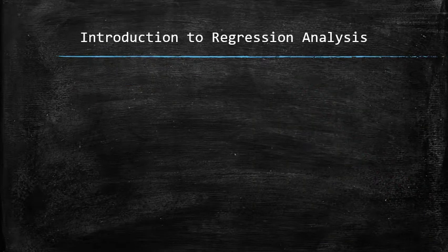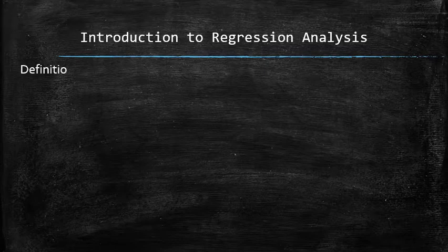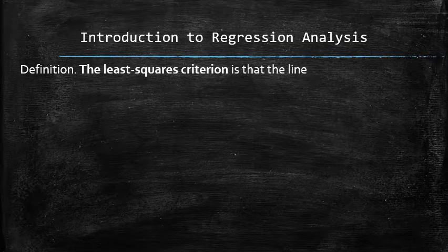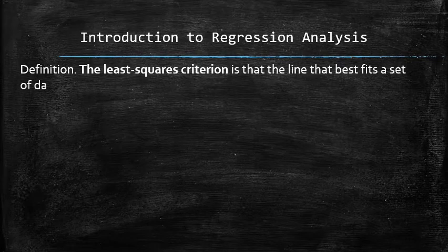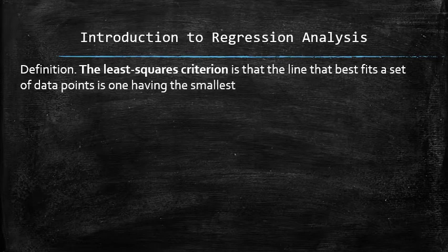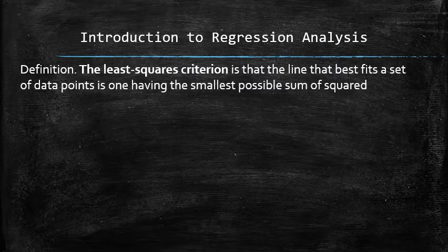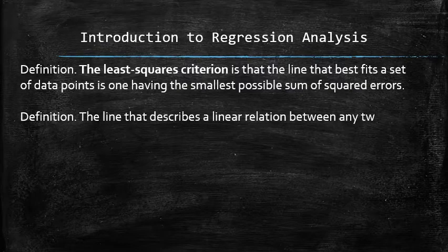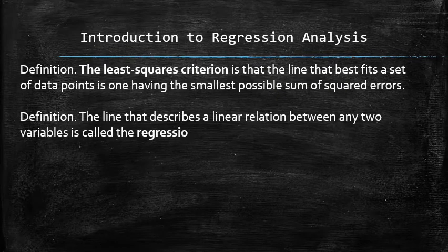The criterion that proved itself practical is the least squares criterion. It suggests that the line with a smaller sum of squared errors has a better fit to the dataset. The line that describes a linear relation between any two variables is called the regression line. And its equation is called the regression equation.